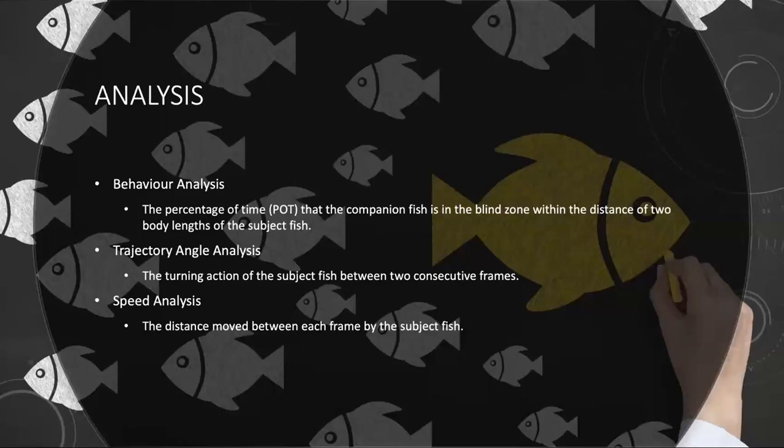To analyze it and find something from our experiment, we set up three main methods of analysis. First is behavior. We think it's the most important one because it's directly related to our findings. It's the percentage of time that the companion fish is in the blind zone of the subject fish. Second is trajectory angle, like how is the fish turning. And third is the speed analysis. Will it swim faster or slower during different periods of experiments or across different experiments?